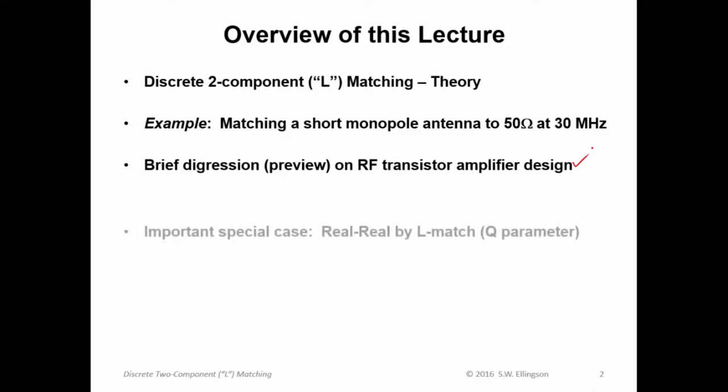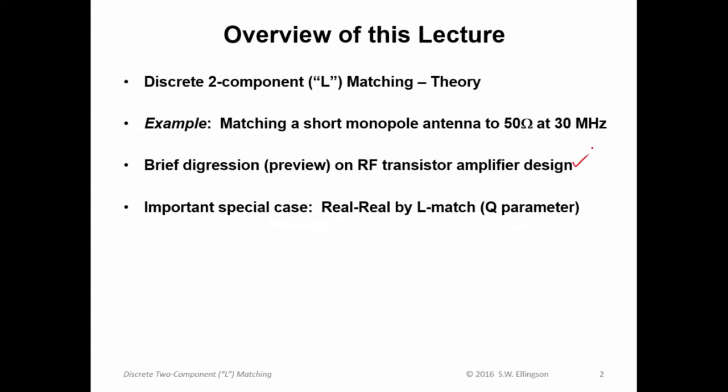We'll discuss an important special case: real-to-real matching using the same theory. In general, this is complex-to-real or vice versa. So real-to-real is a special case, and it turns out in this special case, out will pop a parameter which we'll call Q, and this Q parameter has ramifications later. At the same time, we'll see a simpler way to do matching when both impedances are real. To demonstrate that technique, we'll do an example where we go from 5 kilohms to 50 ohms at 75 megahertz, a very typical kind of impedance matching problem. And then finally, a summary to review these techniques.